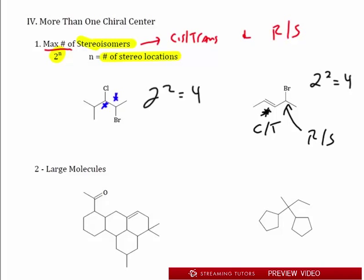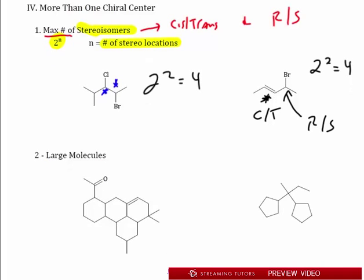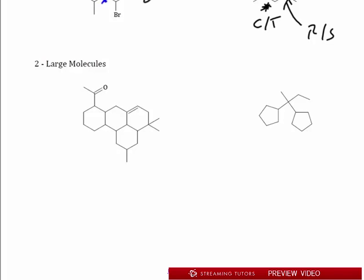Let's go through the basics first, then we'll get into meso compounds. For a big complex system, how do you know how many stereocenters there are? It's actually easy. If you see a carbon that has either four bonds or three visible bonds plus an H, you just assume it's chiral. You can ignore double bond and triple bond carbons — any atom that's double or triple bonded, just move on, because they won't have four different groups.